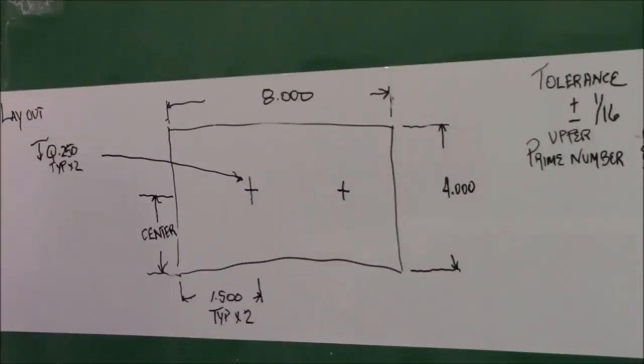If you can remember the lines that we did on the blueprint reading, a circle is depicted with a crosshair, and the circle actually, when you put this in and you start measuring it, is from the center of the circle out.